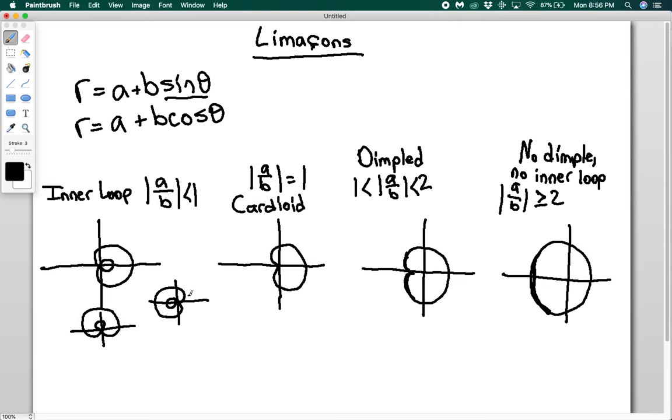Whereas sine, if I draw a line through the dimple, wherever that is, or through the inner loop to bisect that, then that's going to be the theta equals pi over two line. But how do we control which direction it is? So the sign of B actually controls what direction it is.